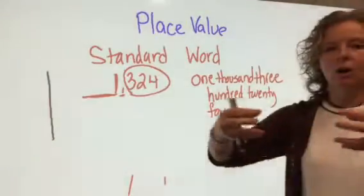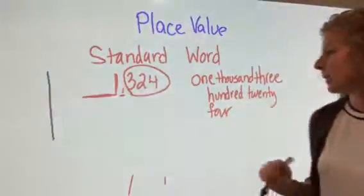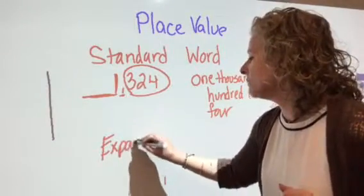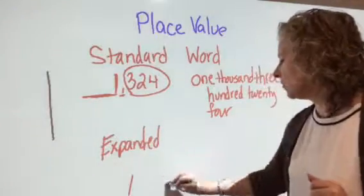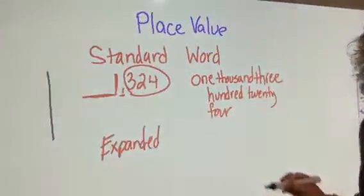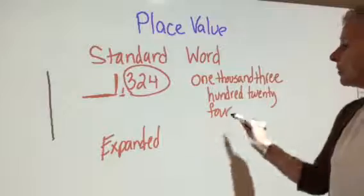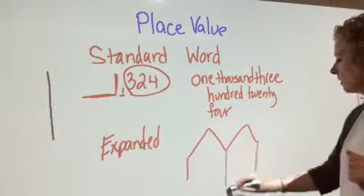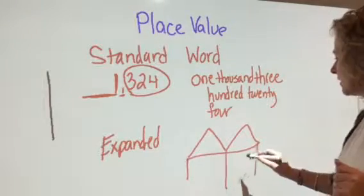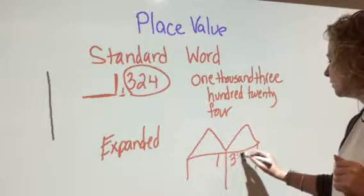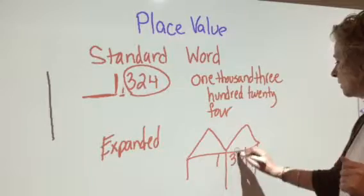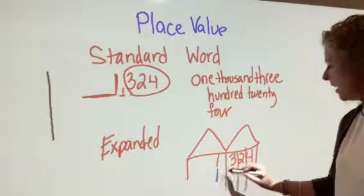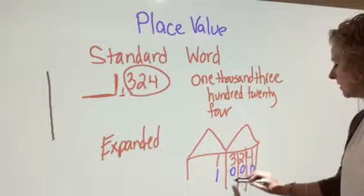And then we've got the one where you are expanding. You're making it bigger. Expanded form, when you do this one, instead of checking out the comma first like you do for word form, for this one I would have you make the house. So when you're making the house and you're gonna stick that one in there. 1, 3, 2, 4.